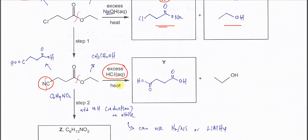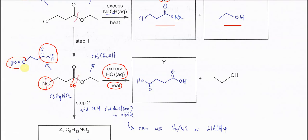The ester bond will break, and this part will again form ethanol. This carbonyl group will also get OH to form COOH from the ester part. The nitrile group will also undergo hydrolysis and form a carboxylic acid as well. Therefore, compound Y will be the dicarboxylic acid.